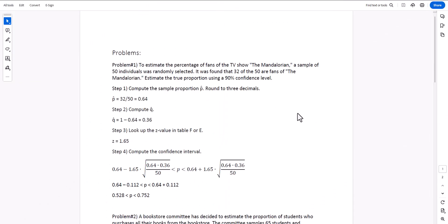Hi, in this video I'll work out a couple of examples for computing a confidence interval for a proportion. We begin with the following problem. To estimate the percentage of fans of the TV show The Mandalorian, a sample of 50 individuals was randomly selected. It was found that 32 of the 50 are fans of the show. Estimate the true proportion using a 90% confidence interval.